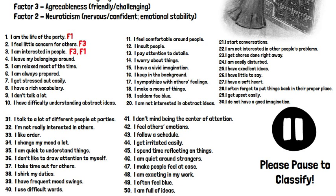Number four, 'I leave my belongings around' — I would put that in Factor 4, conscientiousness. Number five, 'I am relaxed most of the time' — that's F2, neuroticism or emotional stability. Number six, 'I'm always prepared' — that would be conscientiousness, organization. Number seven, 'I get stressed out easily' — that would be Factor 2, neuroticism, emotional stability. Number eight, 'I have a rich vocabulary' — that would be openness to experience, intellect and imagination. Number nine, 'I don't talk a lot' — that would be F1, extroversion. Number ten, 'I have difficulty understanding abstract ideas' — that would be F5, intellect and imagination, openness to new experiences.